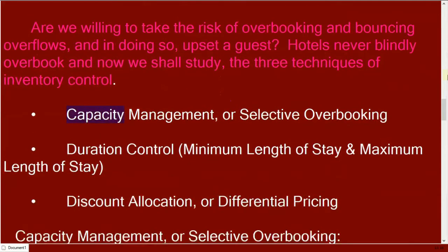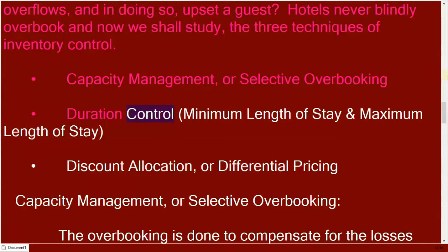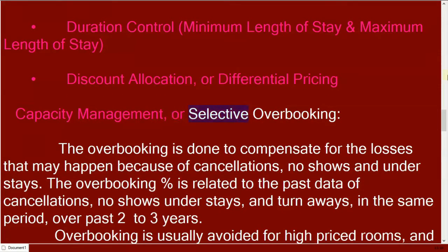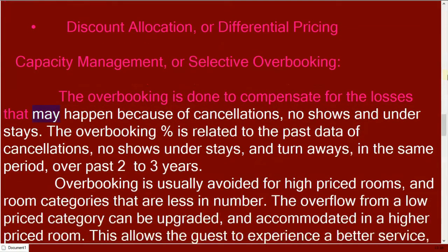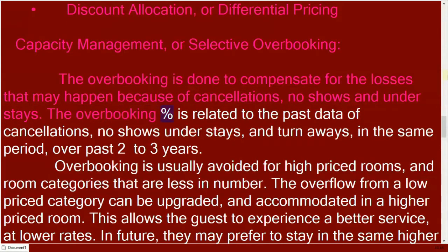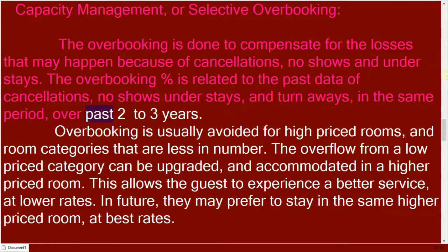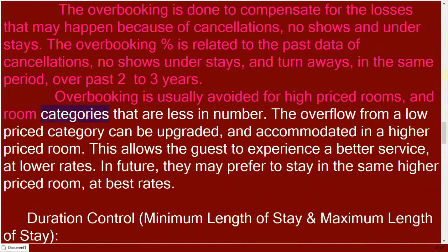There are three techniques of inventory control: capacity management or selective overbooking, duration control, and discount allocation or differential pricing. Capacity management or selective overbooking is done to compensate for losses that may happen because of cancellations, no-shows, and understays. The overbooking percentage is related to past data of cancellations, no-shows, understays, and turnaways in the same period over the past two to three years.